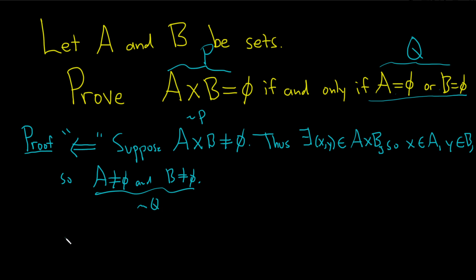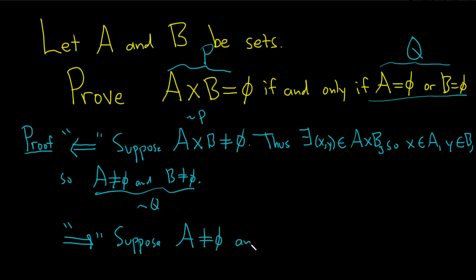Let's prove the other direction. Now we're going to prove this direction here, so we have to show that if p is true then q is true. We're going to use proof by contrapositive again: we'll assume that q is not true and show p is not true. So suppose that q is not true. That means that A is not empty and B is not empty. This is not q — I want to emphasize that. The logic is the hardest part of this problem, like understanding what's going on. So we're assuming q is not true.